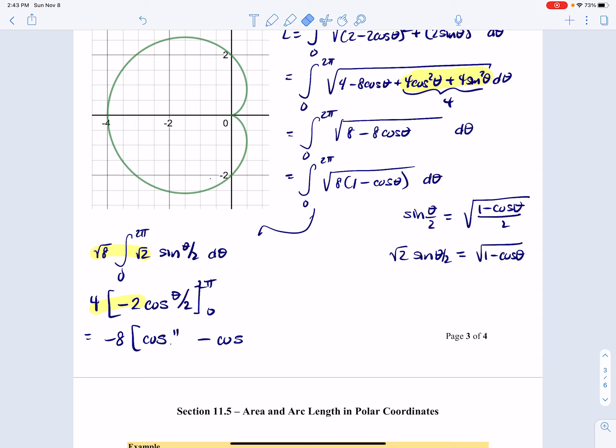whoopsie, cosine of pi minus cosine of 0. And this is negative 8 times negative 1 minus 1, which turns into positive 16.